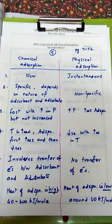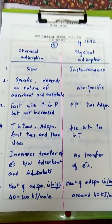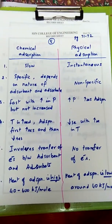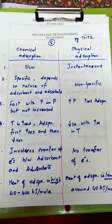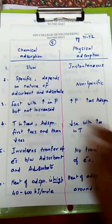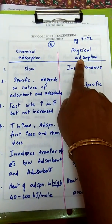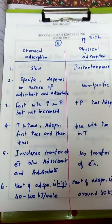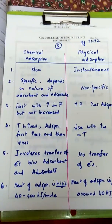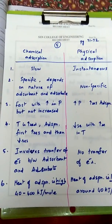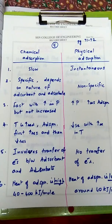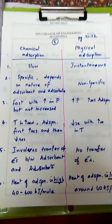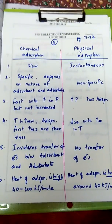Hi students. Last class we discussed about adsorption and its types. Now we are going to discuss the difference between the two types of adsorption. There are two types: chemical adsorption and physical adsorption. Adsorption is a surface phenomenon — it occurs at the interface between two phases. When molecules of one phase are present in higher concentration at the interface, the substance is said to be adsorbed.